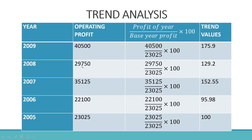For 2008, the profit is 29,750. The calculation is 29,750 divided by 23,025 into 100, giving 129.2. For 2007, the operating profit is 35,125. The calculation is 35,125 divided by 23,025 into 100, giving 152.55. For 2006, the operating profit is 22,100. The calculation is 22,100 divided by 23,025 into 100, giving 95.98.